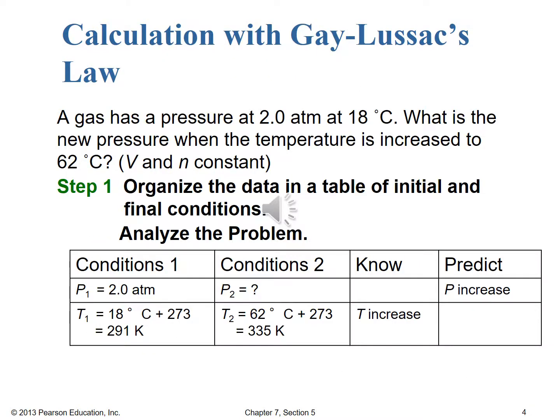Let's work a problem involving Gay-Lussac's Law. A gas has a pressure of 2.0 atmospheres at 18 degrees Celsius. What is the new pressure when the temperature is increased to 62 degrees Celsius, with volume and number of moles held constant? Step one: organize data into a table. P1 = 2.0 atm, T1 = 18°C which converts to 291 K, P2 is unknown, and T2 = 62°C which converts to 335 K. We see a temperature increase, so we predict a pressure increase.